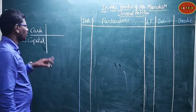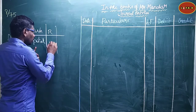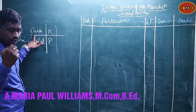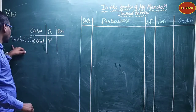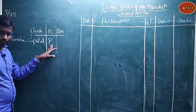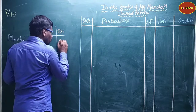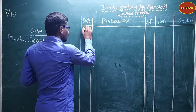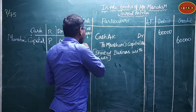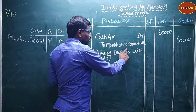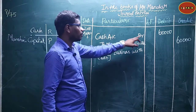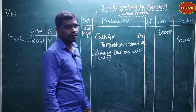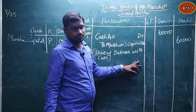Cash is a real account; Manovar's Capital is a personal account. Real account rule: debit what comes in, credit what goes out. Cash comes into the business, so we debit cash. Personal account rule: debit the receiver, credit the giver. Manovar is the giver, so we credit Manovar's Capital. Journal entry: Cash Account Dr. to Manovar's Capital Account — 60,000 debit, 60,000 credit. Narration: Started business with cash.